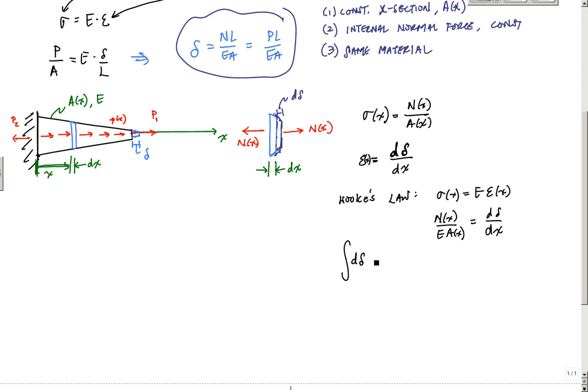So here, this d delta, I want to take the integral, so I can calculate, I want to sum up all the little increments here. N of x, EA of x, dx, right here, from 0 to L for the length of this. I didn't find a length right here, let's call that length L, right here.